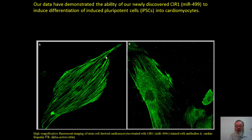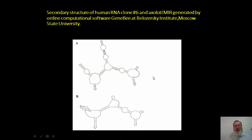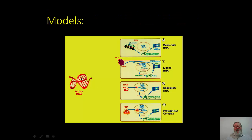At higher magnification, the treated mouse stem cells stained with cardiac troponin T show alignment along what appear to be forming myofibrils in characteristic spindle-shaped muscle cells. Alpha-actinin staining also shows the presence of organized myofibrils in these stem cells that have formed into apparent cardiac cells. The secondary structures of these human active clones are very similar to the active axolotl RNA clone, suggesting structural similarities that potentially allow binding to similar kinds of proteins.